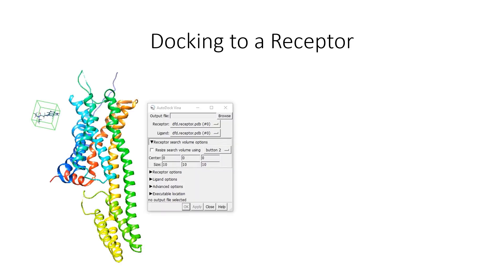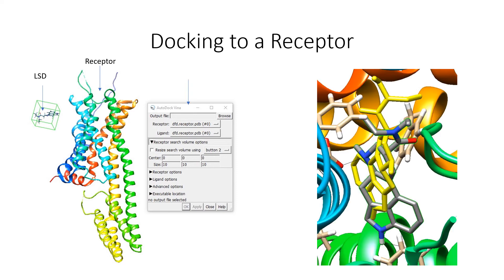Let's look at how you might actually dock a drug to a receptor. You can use a program like AutoDock Vina: you tell it what drug to use, what receptor to use, and because we know where the orthosteric binding site is, we can tell the program approximately where the drug might bind using a dialog box. When you run the computation, you get a result showing the active site occupied by the drug. You might see two drugs overlaid — one in gray and one in yellow — representing two different conformations, each with different stabilities.